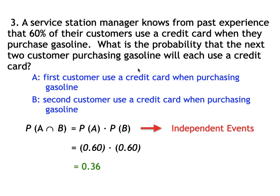So 0.36 is the probability that both the first and second customers will use a credit card when purchasing gasoline. This concludes our discussion for Module 5.2.